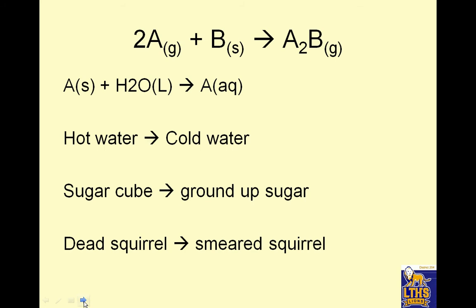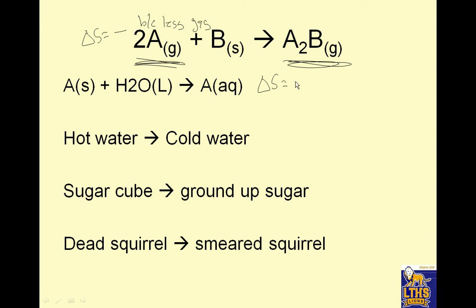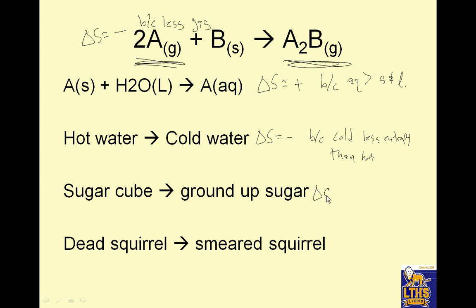Take the reaction 2A + B → A₂B. Which side has more entropy? The left side has two gases, the right side has one gas. The first thing to look at is gases. So delta S for this reaction is negative because there is less gas on the product side. Another example: delta S is positive because aqueous state has greater disorder than solid and liquid. Hot water and cold water mixing — delta S is negative because cold is less entropy than hot. Sugar cube turning into ground-up sugar — delta S is positive because ground-up is a bigger mess.